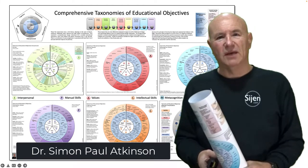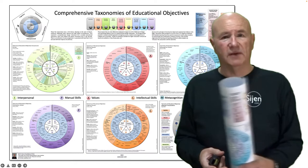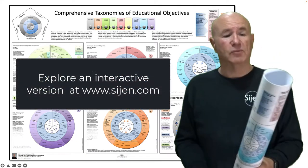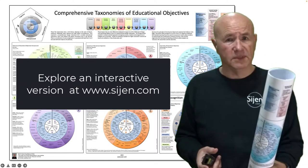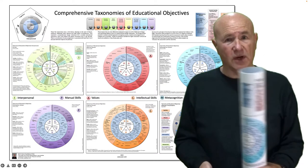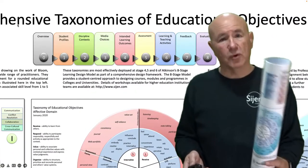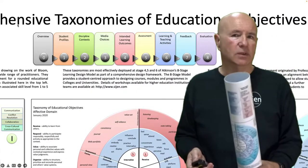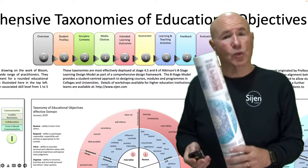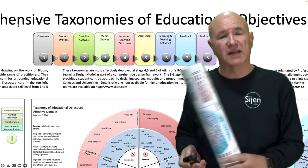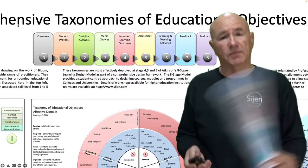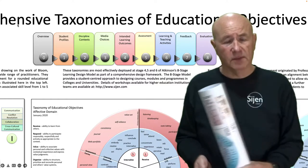I'd like to introduce you to a visualization that's been prepared for five separate taxonomies, all represented as circular forms. It's important to recognize that these outcomes form one part of the program or course design sequence. Outcomes are established when you're already in the context — you already know what the student profile is, the student context, the media context — and then you write your outcomes.